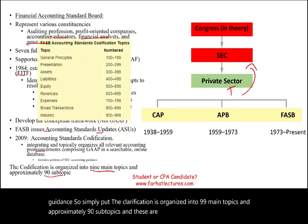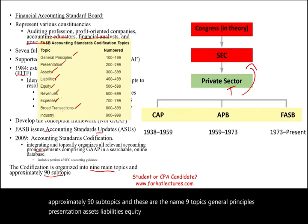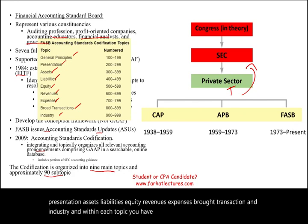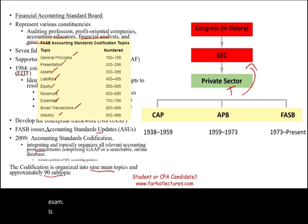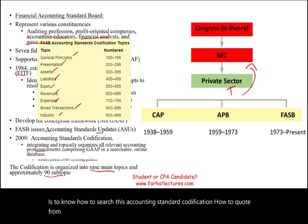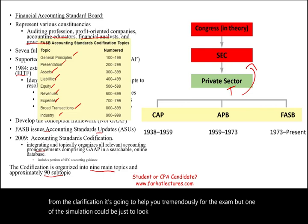The codification is organized into nine main topics and approximately 90 subtopics. The nine topics are: general principles, presentation, assets, liabilities, equity, revenues, expenses, broad transactions, and industry. Part of the CPA exam involves knowing how to search the Accounting Standards Codification and how to cite from it, as a simulation question could require looking up a specific codification reference.